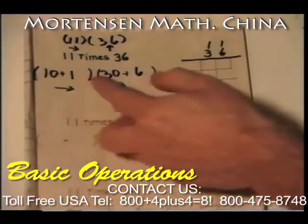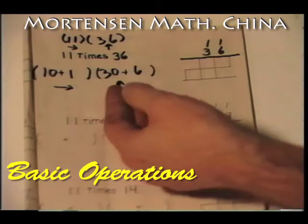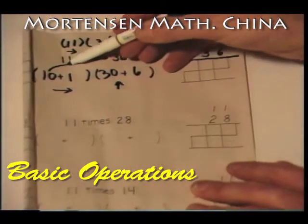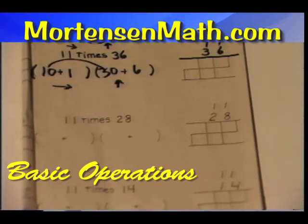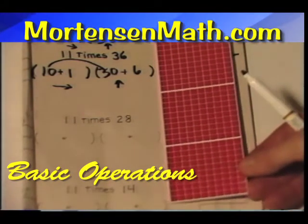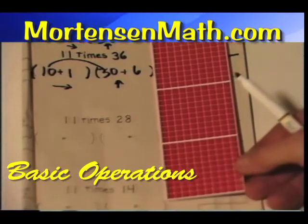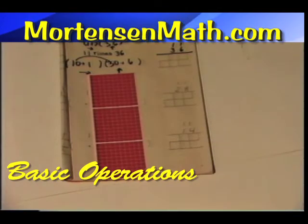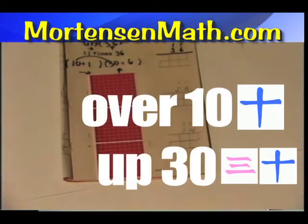If we go over ten and stop before going another one and go up thirty before we go another six, we have over ten up thirty and we have identified our first piece. Here we can see our first piece. Over ten, up thirty, we have our first piece.